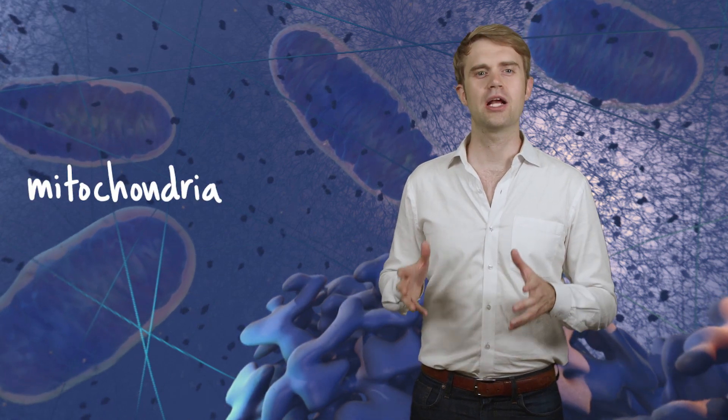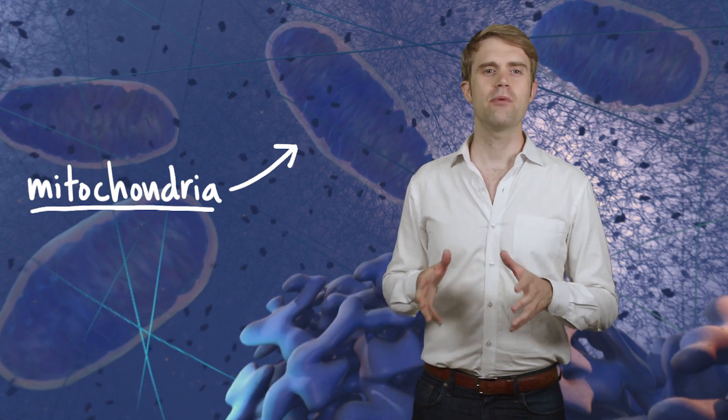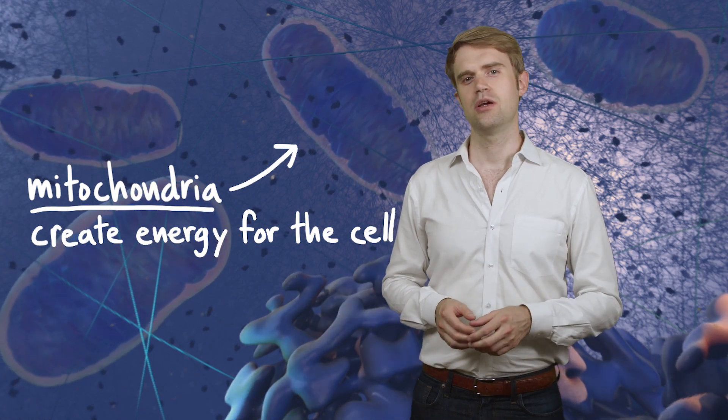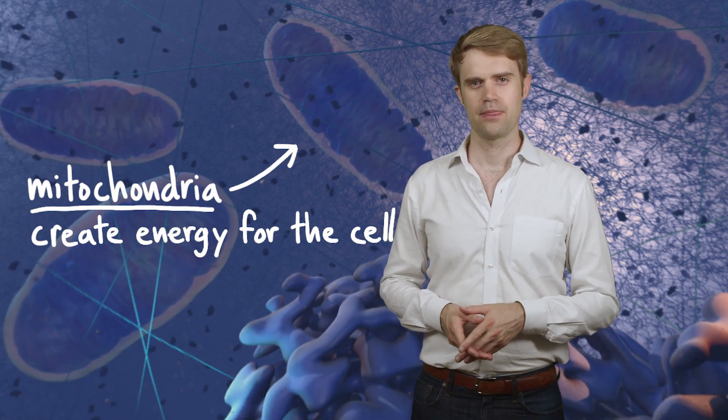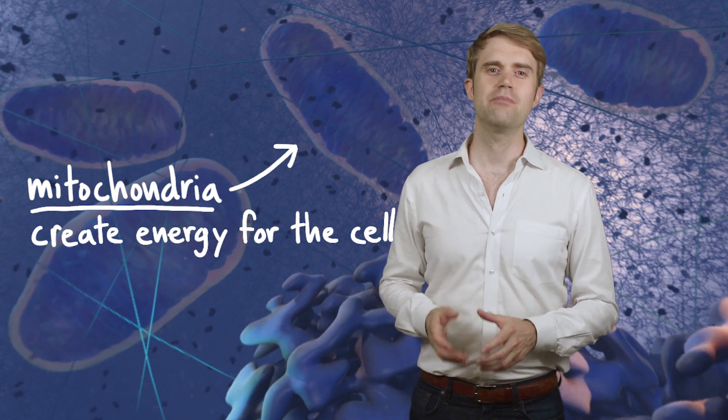You'll also see some really large oval-shaped structures towards the top of the cell. These are organelles called mitochondria. The mitochondria are often known as the powerhouses or the power plants of the cell, and their main job is to take in food and create energy the cell needs to survive. Pretty much everything in the cell relies on energy created by the mitochondria.